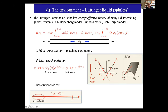Let me start by introducing the Luttinger liquid. The Luttinger Hamiltonian is a low energy effective theory of many interacting one dimensional systems — for example, the Heisenberg XXZ Hamiltonian, the Hubbard model, the Lieb-Liniger model. All of those models, when you study them at very low energy, have a universal description in terms of what is called the Luttinger Hamiltonian. The Luttinger Hamiltonian consists of right and left moving particles, with a kinetic term and a density-density interaction.